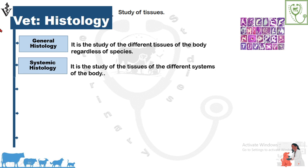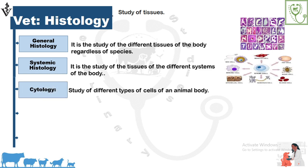Systemic histology is the study of the tissues of the different systems of an animal body — we study the histology of each system separately. Cytology is the study of the different types of cells of an animal body. Since there are various tissues and cells in the animal body, the study of each cell is referred to as cytology.